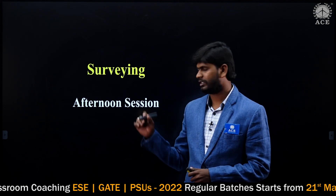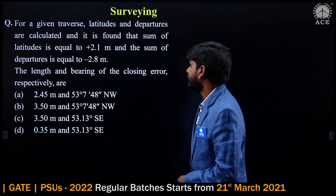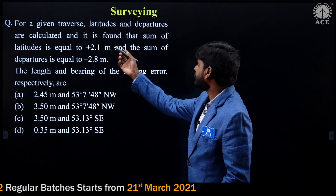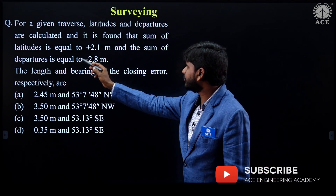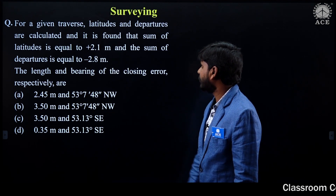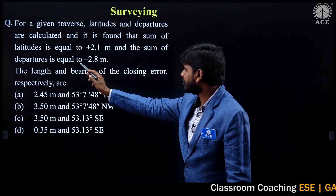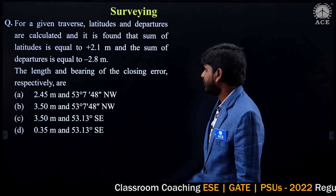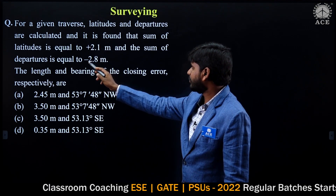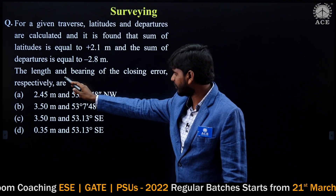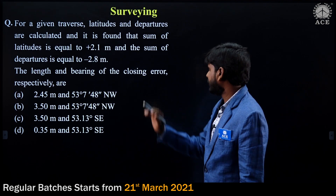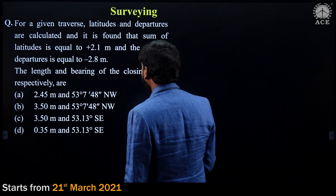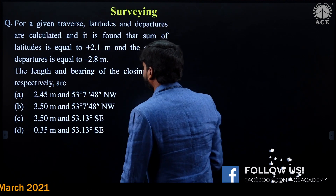Now let us have a look at the afternoon session questions. Here is a question: for a given traverse, latitudes and departures are calculated, and it is found that sum of latitudes is equal to plus 2.1 meters and the sum of departures is equal to minus 2.8 meters. He is asking us to calculate the length and bearing of the closing error.